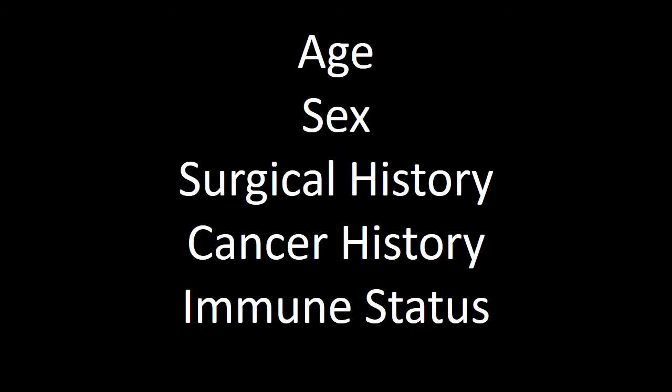Demographics, which can also be thought of as a brief clinical history, are critical to creating a good differential diagnosis when looking at chest abnormalities. In the chest, many different abnormalities are nonspecific, and without clinical information, it's going to be hard to provide something more than just calling it an airspace opacity. But if you have the patient's age, their sex, whether they've had surgery, whether they currently have or had cancer, and whether they're immunocompromised, you can often narrow your differential diagnosis with these five elements.